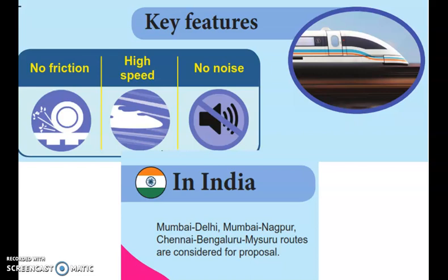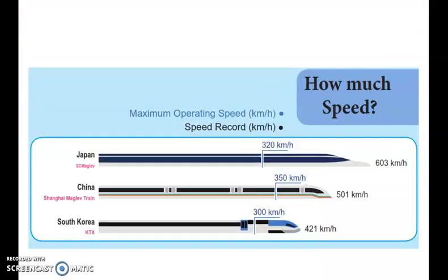In India, maglev routes are proposed: Mumbai to Delhi, Mumbai to Nagpur, Chennai to Bangalore, and Mysore routes are being considered. In Japan, the maglev train has achieved a speed of 603 km/h.